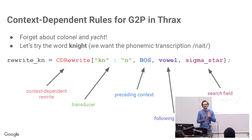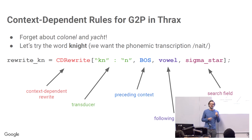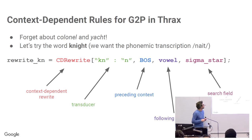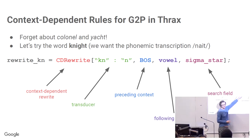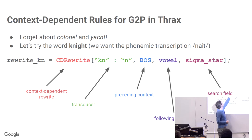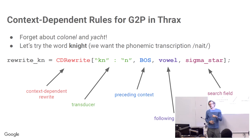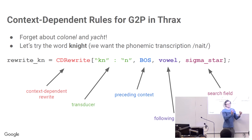Context-dependent rewrites are basically transducers - changing one string to another string plus some context in which the change should occur. These are crucial for the grapheme-to-phoneme problem. Here's a context-dependent rule written in Thrax. Forget 'colonel' and 'yacht' - those go in the lexicon. But for a word like 'knight', it is possible to get from the spelling K-N-I-G-H-T to the phoneme transcription N-A-I-T. First we deal with the silent K: we rewrite KN to N alone, with a preceding context of beginning-of-string and a following context of any vowel.